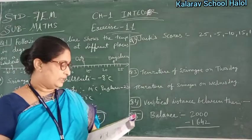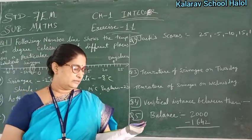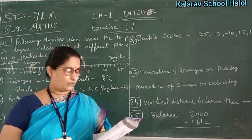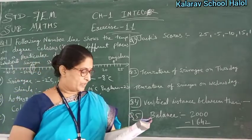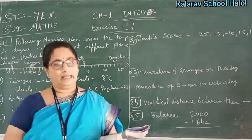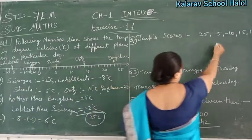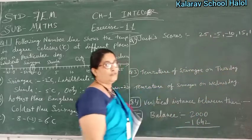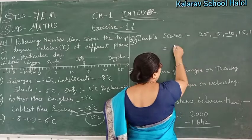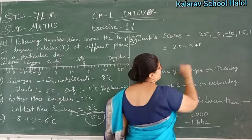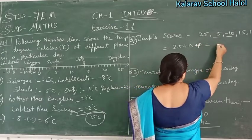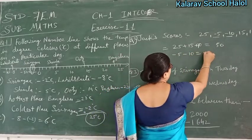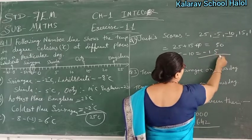Question 1 is finished. Question number 2: In a game, positive marks are given for correct answers and negative marks for incorrect answers. If James's scores in 5 successive rounds were 25, minus 5, minus 10, 15, and 10, what was his total at the end? Negative marks are minus 5 and minus 10. Positive marks are 25, 15, and 10. Adding positives: 25 plus 15 plus 10.